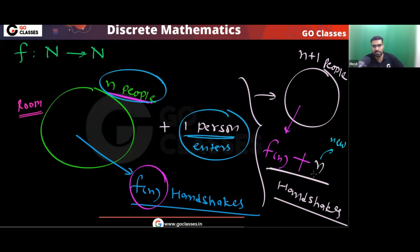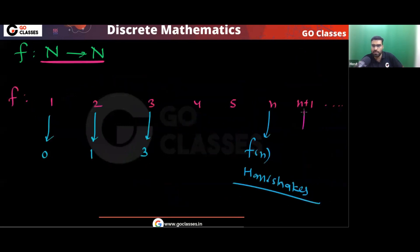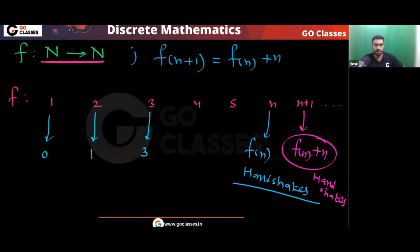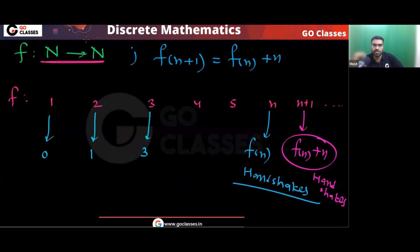So these are the new handshakes. Finally, when you have n+1 people, you are getting f(n) + n handshakes. So recursively we get: f(n+1) = f(n) + n. In other words, f of next equals f of current plus n.